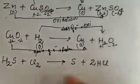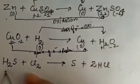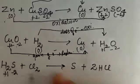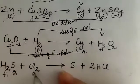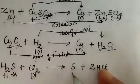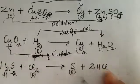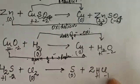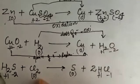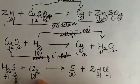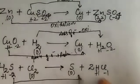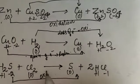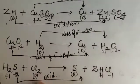If we talk about the next reaction, H₂S plus Cl₂ gives S plus 2HCl. Assigning values: hydrogen is plus 1, sulfur is minus 2, chlorine is in elemental form so it is zero, sulfur on the product side is in elemental form so it is zero, hydrogen is plus 1, and chlorine is minus 1. Sulfur went from minus 2 to zero, meaning it is losing electrons — so that is oxidation.